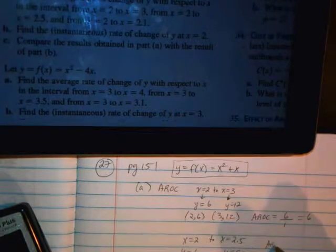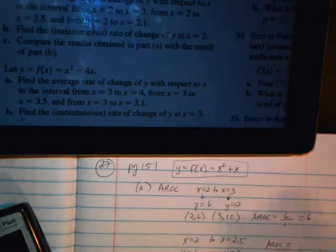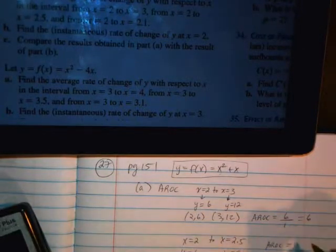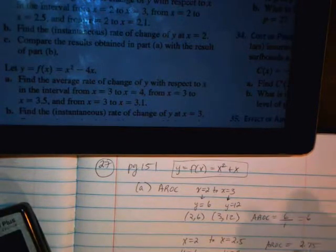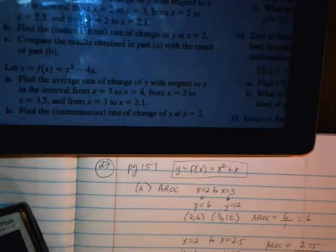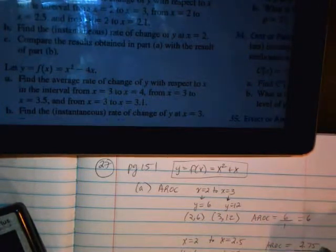So average rate of change, change in y, 8.75 minus 6, which is 2.75 divided by .5. So 2.75 divided by .5 is 5.5.